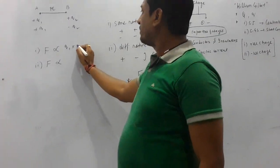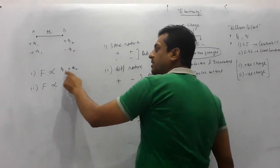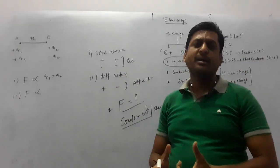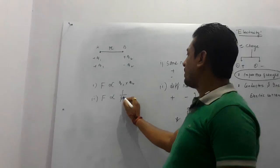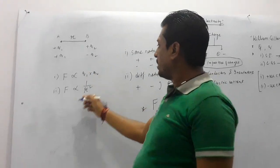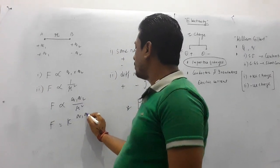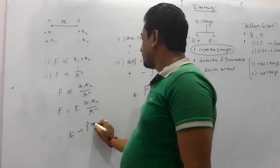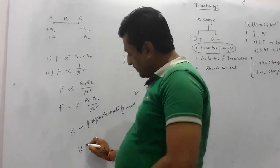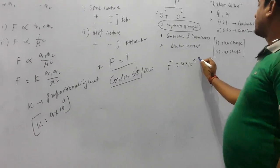Number one: the force varies directly with the product of the magnitudes of the charges. If charges are of larger magnitude, force will be more; if smaller, force will be less. Number two: the force varies inversely with the square of the distance between the charges. If distance is more, force is less; if distance is less, force is more. Combining these two: F is proportional to q1×q2/r², or F = k×q1×q2/r², where k is the proportionality constant with numerical value 9×10⁹.